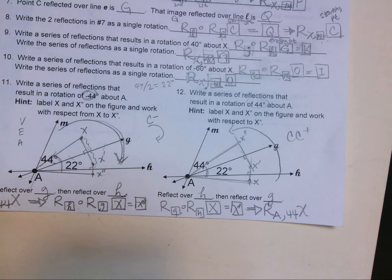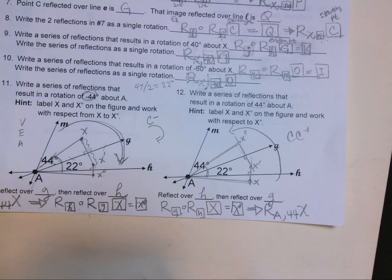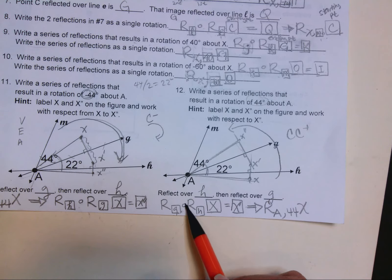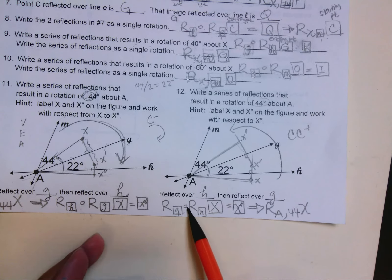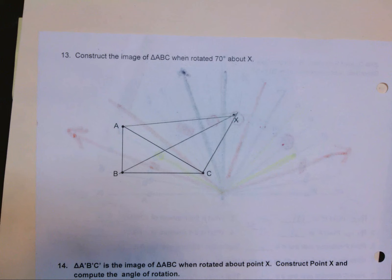So this little O here means composite functions. We are composing two functions at the same time. The first one is reflecting across line H and then the next one is reflecting across line G. So you have to do the one on the right hand side first and then to get your final answer. So that's all that is for that one. And let's go to number 13.